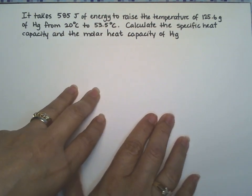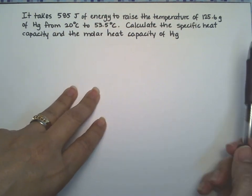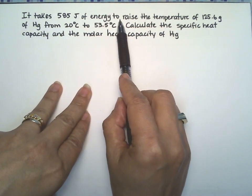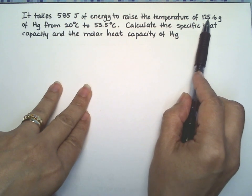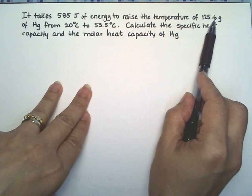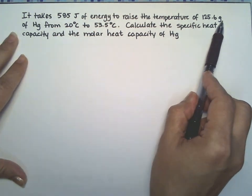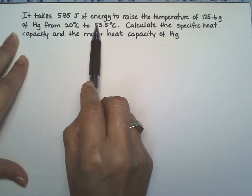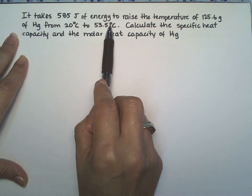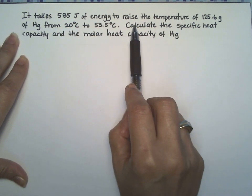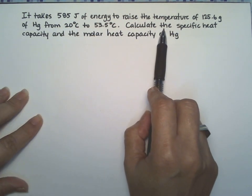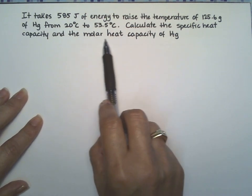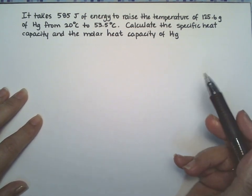It takes 585 joules of energy to raise the temperature of 125.6 grams of mercury from 20 to 53.5 degrees Celsius. Calculate the specific heat capacity and the molar heat capacity for mercury.